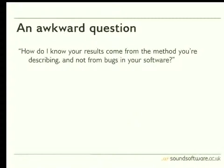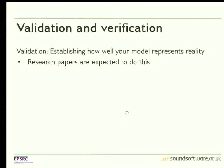All of this is leading towards the big question about research software: how do you know that your results actually come from the method you described in the paper, and not simply from bugs in your code? This is the sort of question that can give you a slightly paranoid feeling once you start thinking about it. Next time you're asked to review a paper, ask yourself: does the author make any effort to convince me that the code is right, as opposed to the method making sense? I've published code in the past that has failed this test, and I now feel pretty nervous about that.